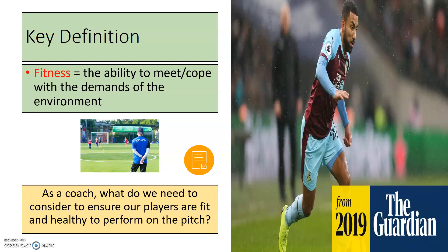I put the footballer there — if you don't know who that is, that's Aaron Lennon. The reason I put him on there is because technically he was fit, able to meet the demands of the environment — a Premier League footballer who played for Spurs, then Burnley and Everton. But ultimately he suffered with depression, and some of these unhealthy traits in terms of mental well-being are sometimes invisible. That's why it's so difficult as a coach to recognise. More is being done now in terms of different coaching courses, but we've got to be able to recognise and understand our players to ensure they're mentally, socially and physically ready for sport.